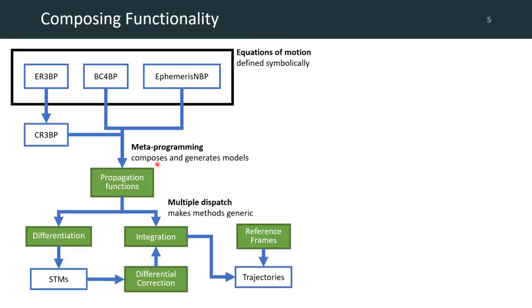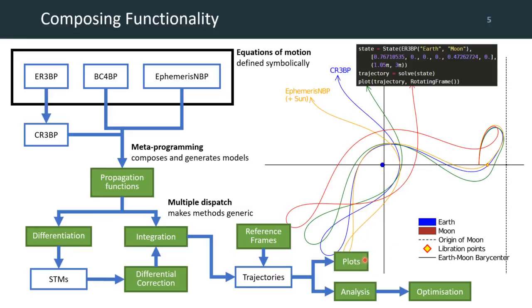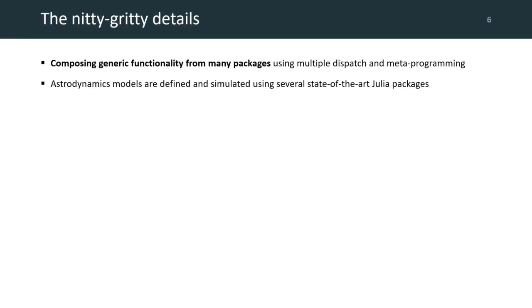Now, we can take these propagation functions and pass them directly to methods for generating and correcting trajectories. With Julia's multiple dispatch feature, these methods are made generic, effectively accepting any of the four models while still being specialized by the Julia compiler to provide high performance computation, and this extends to functionality such as plotting and analysis of trajectories as well. So, for example, we can easily simulate and plot trajectories by passing in a different model, a different initial state, time span, or even reference frames.